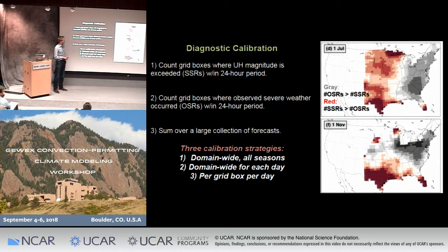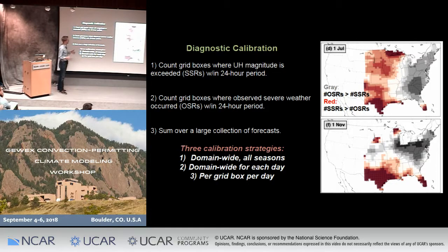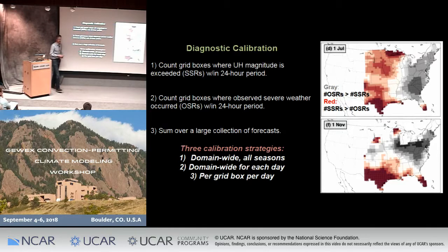This highlights different biases that are present regionally and seasonally within our domain. In the eastern part of the U.S. during summer, there are many more observed severe reports than the particular updraft helicity threshold we used. In the cool season, the biases change, showing more of a north-south distribution of observed versus model bias.